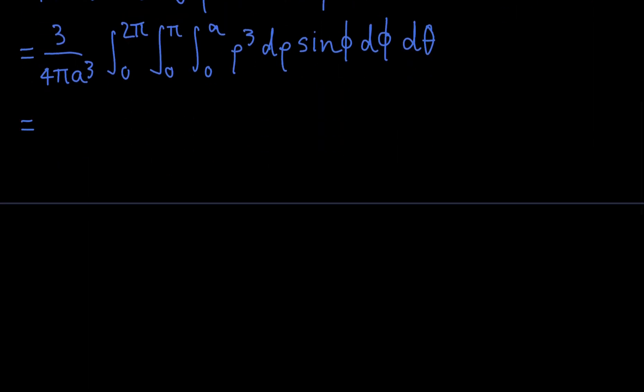And then we can just do 3 over 4 pi a cubed, copying everything else. And what's this thing? This thing is basically rho to the 4th power over 4 evaluated at 0 to a, which is basically a to the 4th over 4. And we have sine phi d-phi d-theta.